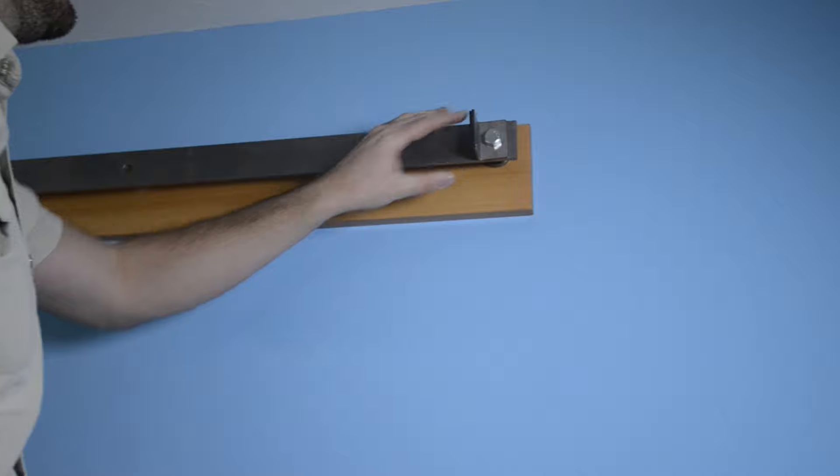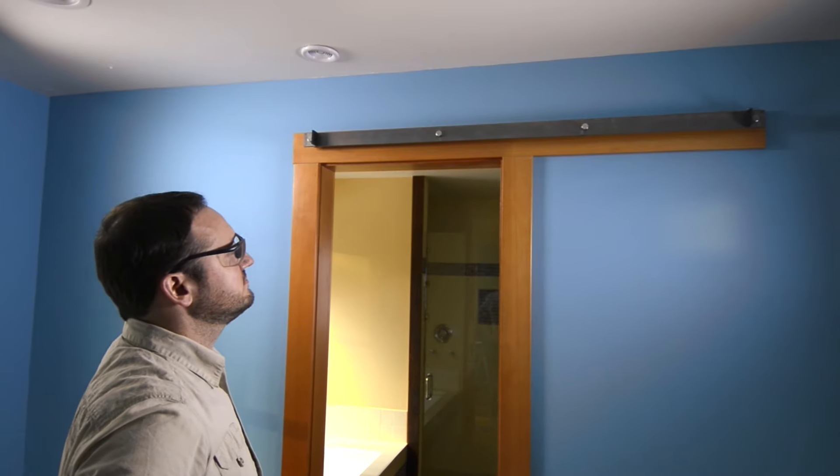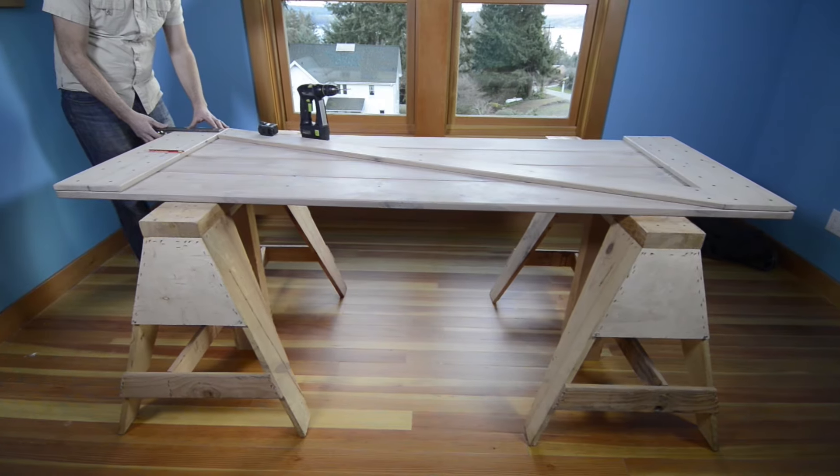From there, place your end stops and screw the remaining bolts into place. Now that you've successfully mounted your rail, you can attach hardware to your door.